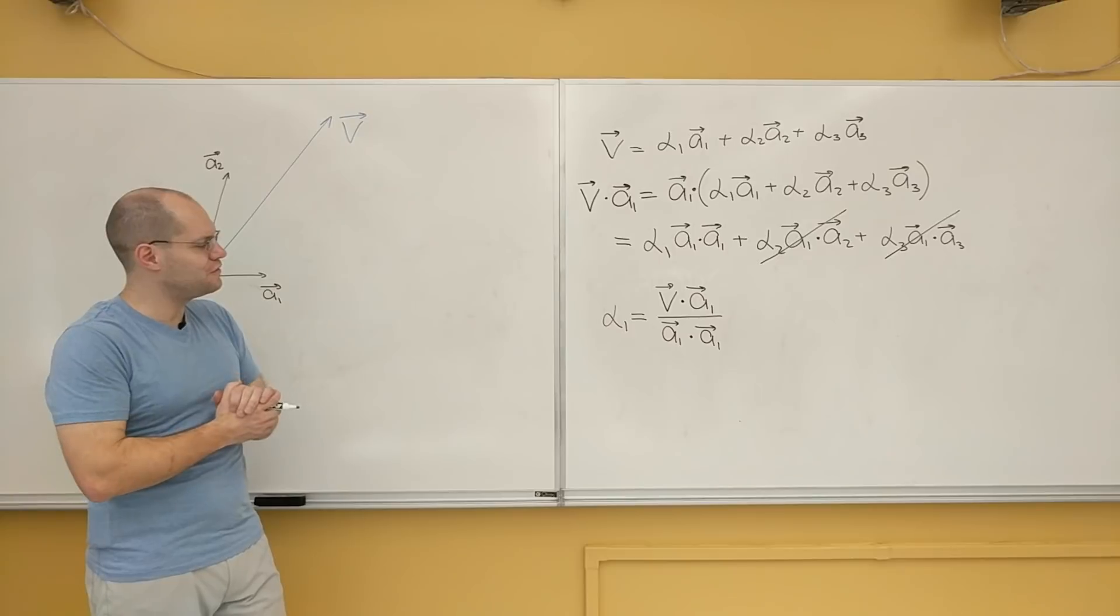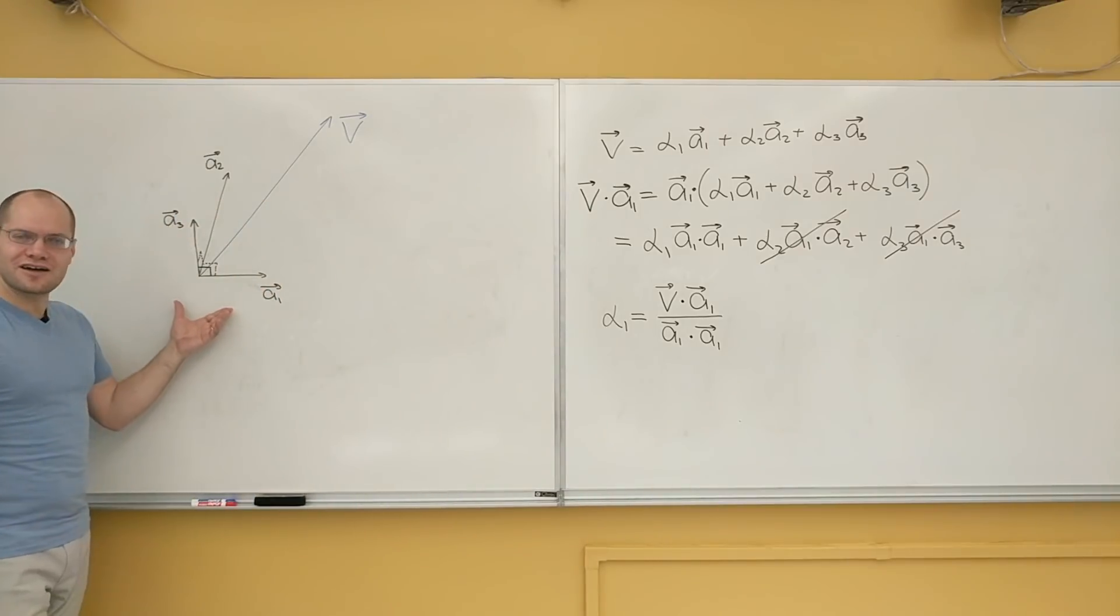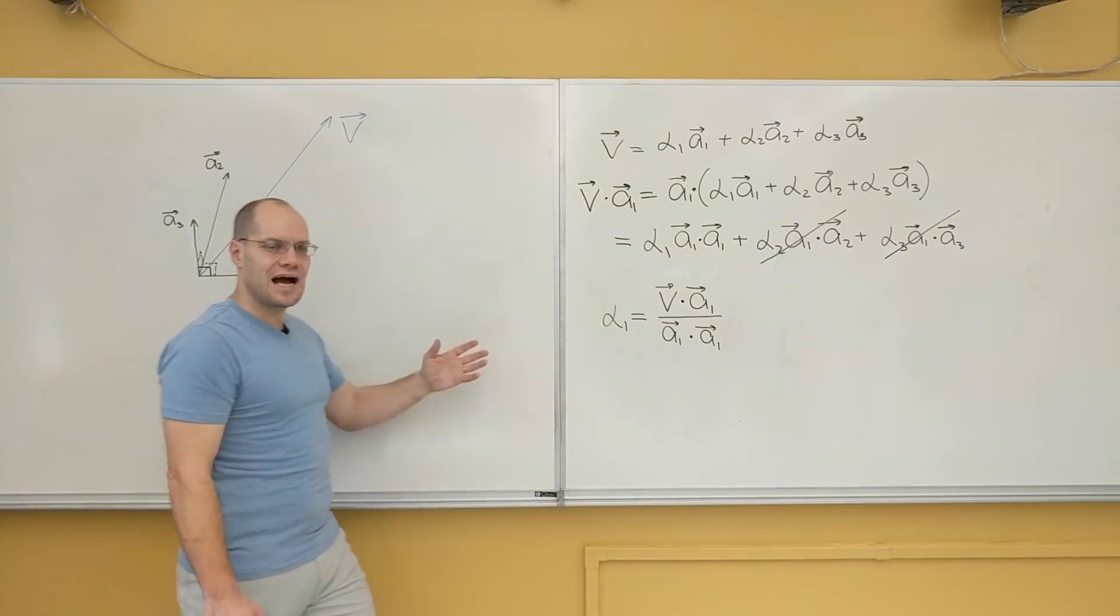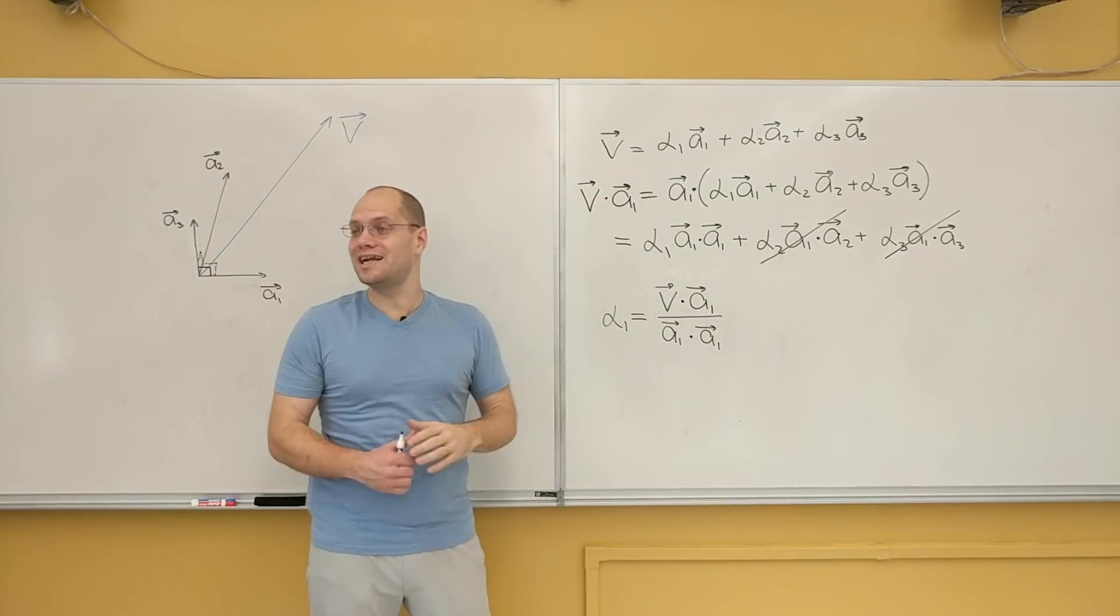By all means, a beautiful formula. It shows that when the set is orthogonal, we can get the decomposition vectors, excuse me, the decomposition coefficients one at a time.